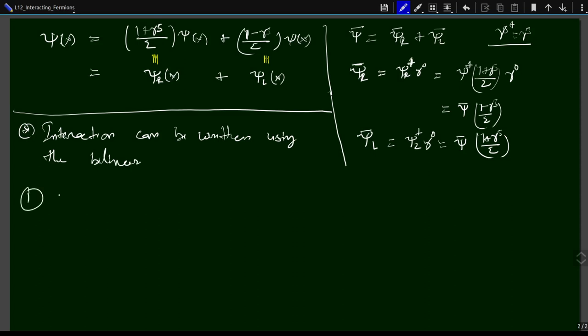Let us consider the first bilinear, psi-bar psi, which is a scalar. This scalar must couple to another scalar field, which we call phi. The operator psi-bar psi has mass dimension 3/2 plus 3/2 equals 3, and phi has mass dimension 1, giving total mass dimension 4 in four dimensions — a valid interaction term where a pair of fermions interacts with a scalar.